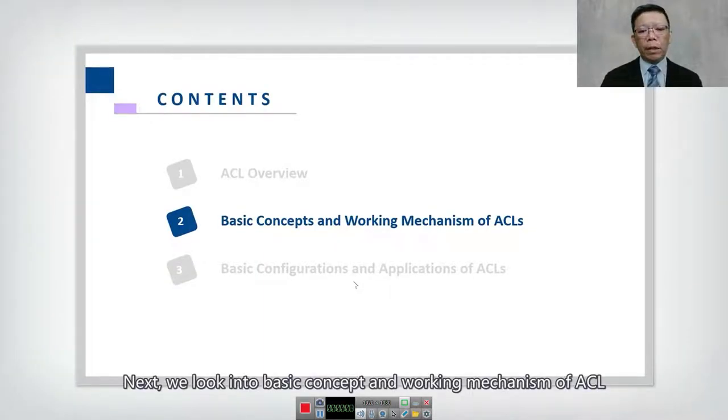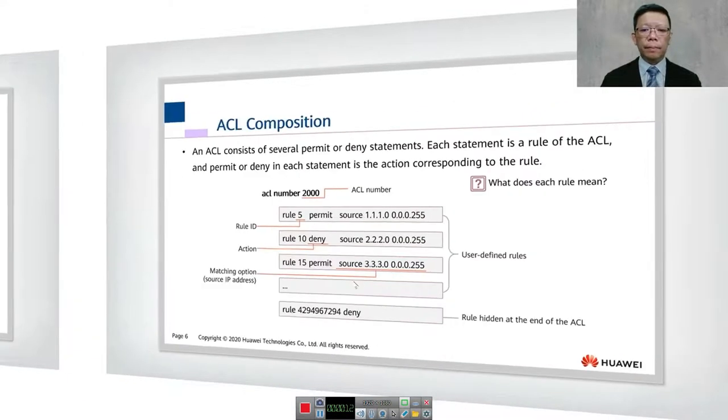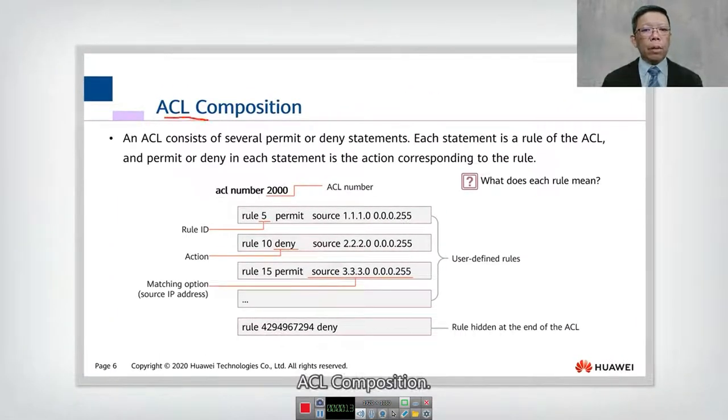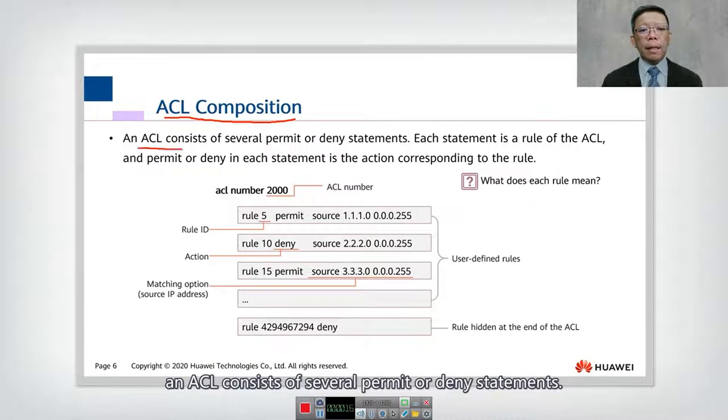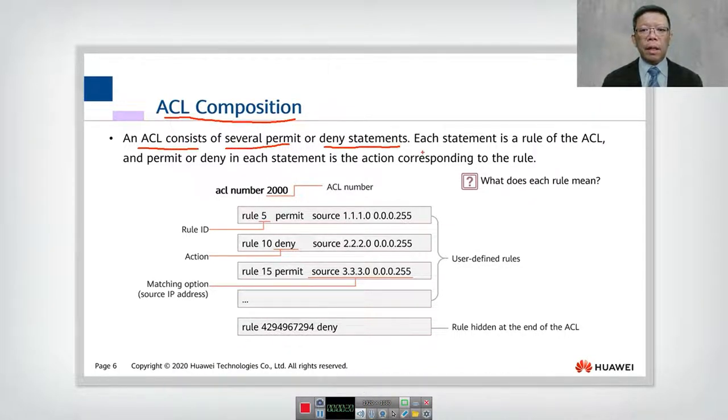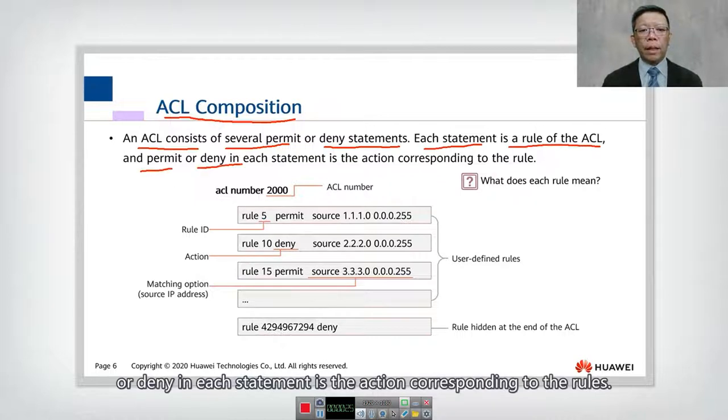Next, we look into basic concept and working mechanism of ACL. ACL Composition: An ACL consists of several permit or deny statements. Each statement is a rule of ACL, and permit or deny in each statement is the action corresponding to the rule.